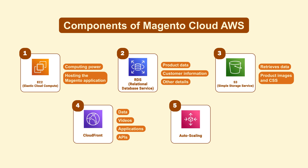AWS Autoscaling ensures the correct number of EC2 instances to handle application load.